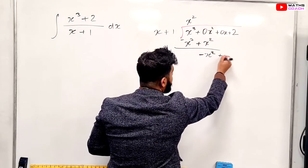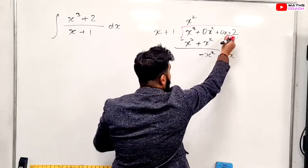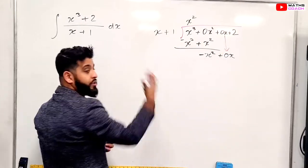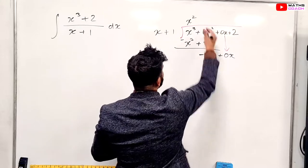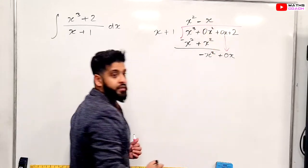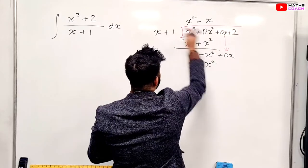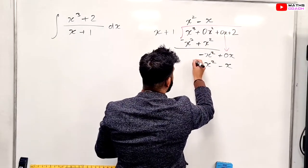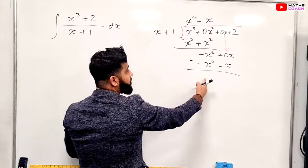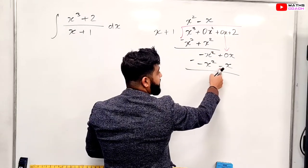We pull this down, and we'll do the same process again. So x, how many times does it go in here? At least minus x. Multiply that out, you get minus x squared, minus x. Take them away, that cancels and you've got 0. Minus minus is a plus, so it's a plus x.